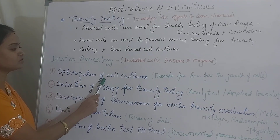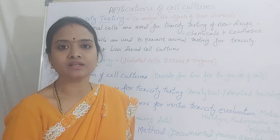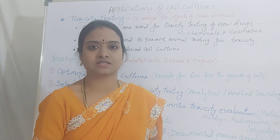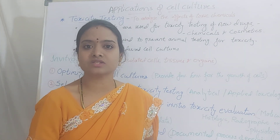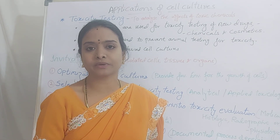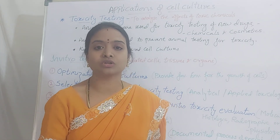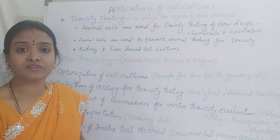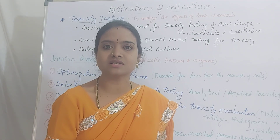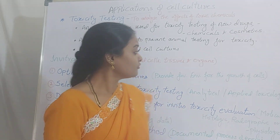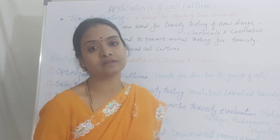The first step is optimization of the cell cultures. This means you need to provide a favorable environment to the cultured cells. The favorable environment includes physico-chemical features like pH, osmotic condition, and temperature. Other requirements are essential nutrients or nutrient supplements — glucose or carbohydrate supplements, amino acids, vitamins, minerals, hormones, growth factors, and so on. When you provide the cells with a complete favorable environment, the cells will grow rapidly and proliferate.